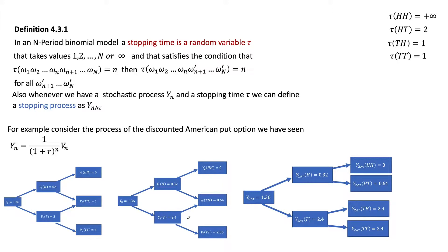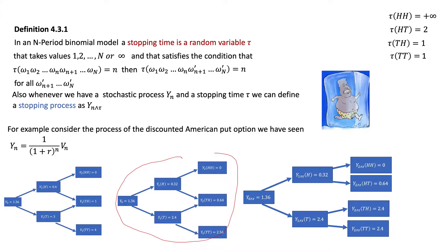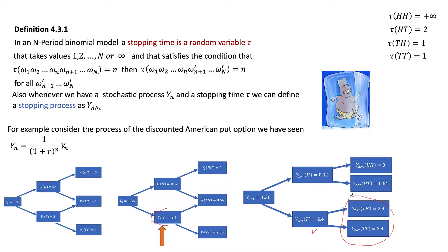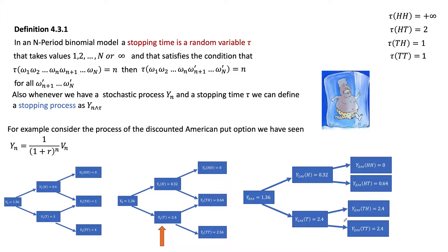This is why it's called a frozen process. The process was doing its own thing, and then when we apply the stopping time, it suddenly gets frozen at a certain point. In this case, the process is frozen at the tail node at time one — after that point, the two values are both equal to the value at that node, 2.4. So starting from there, the process is frozen going forward.